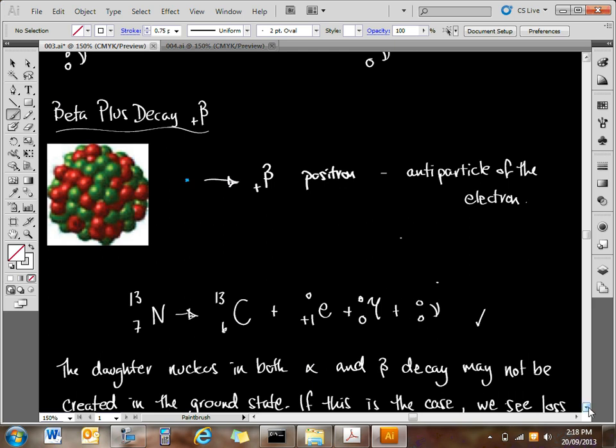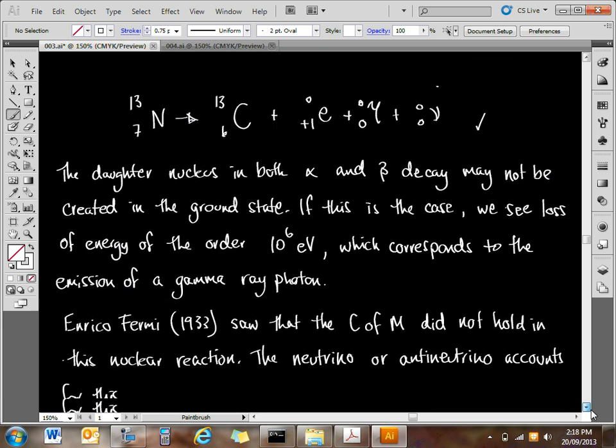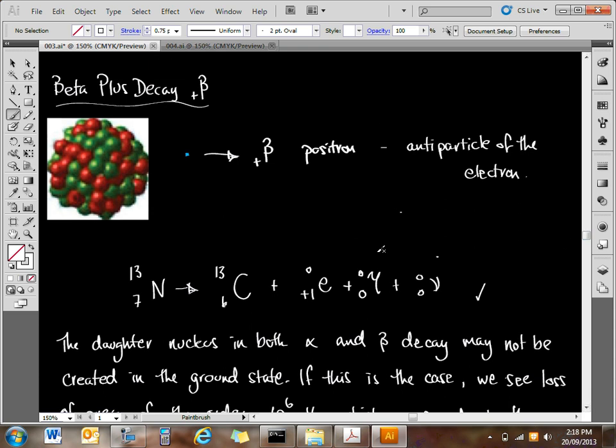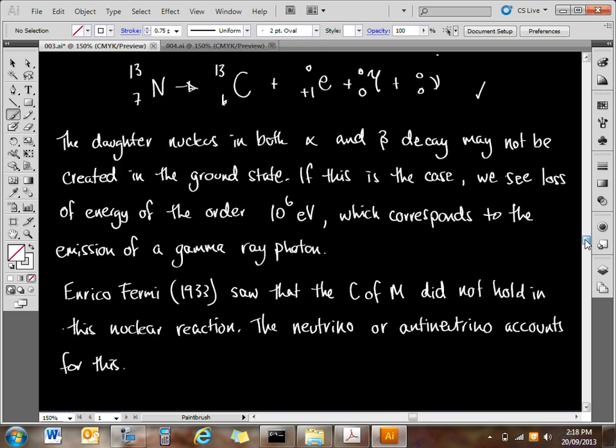Why do we see the gamma ray photons? Remember that the daughter nucleus is created in an excited state, most often. Excited states for nuclei are in the order of millions of electron volts, so in order to drop back down to its ground state, it loses millions of electron volts of energy. That energy is thrown away or gotten rid of in the form of this gamma ray photon.